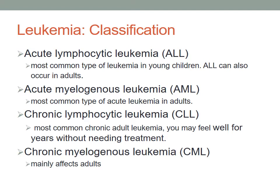Chronic myelogenous leukemia, or CML, mainly affects adults. A person with CML may have few or no symptoms for months or years before entering a phase in which the leukemia cells grow more quickly. This condition is caused by excessive development of mature neoplastic granulocytes in the bone marrow.